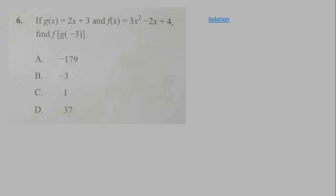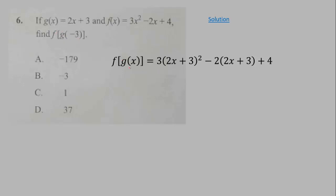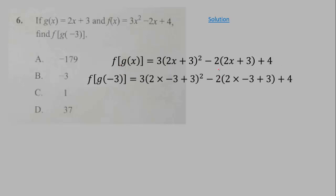Question 6: given g(x) = 2x + 3 and f(x) = 3x² − 2x + 4, find f(g(−3)). For composition of functions, g operates first, then f operates on the result. We can substitute −3 into g(x) to get a value, then place that result into f(x).